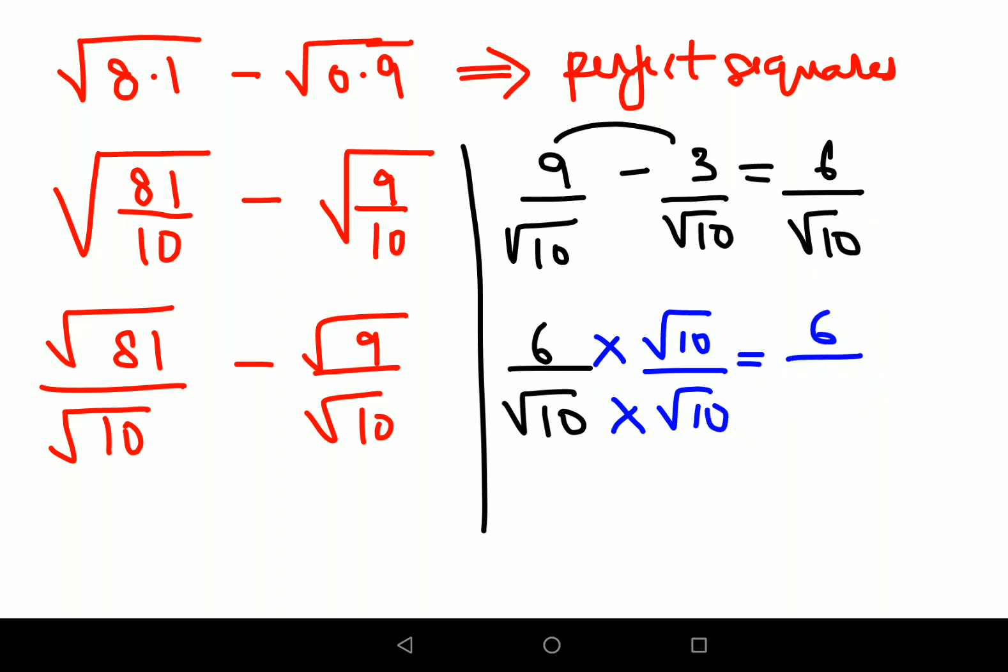So this will get you 6/√10 times √10/√10. √10 times √10 gets you 10. So final answer for this one is 6/10. I can write this as 0.6√10. This is my final answer for this particular question.